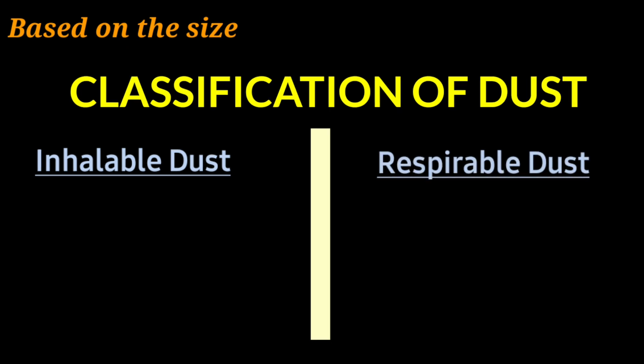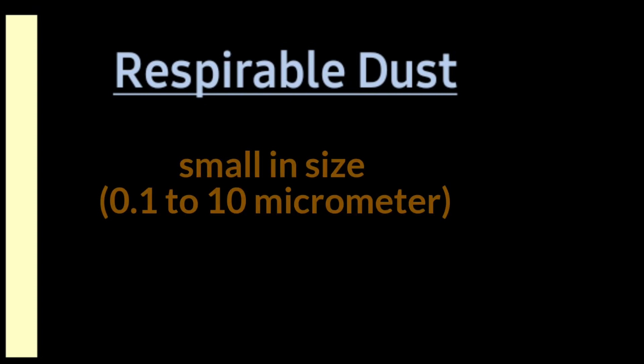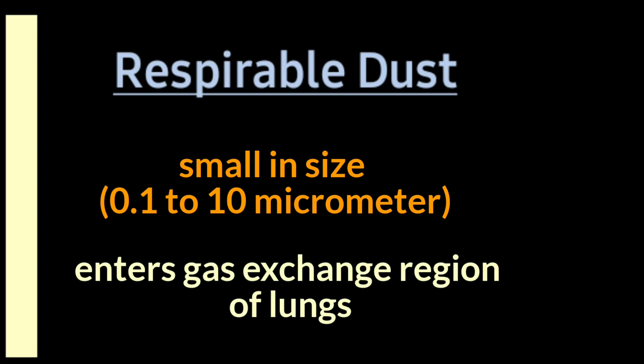Based on the size of the dust particles, we classify dust into two types: inhalable dust and respirable dust. Inhalable dust particles can enter only the nose and mouth during breathing and get deposited there — they are not able to move further. Respirable dust particles are very small in size, in the range of 0.1 micrometer to 10 micrometers.